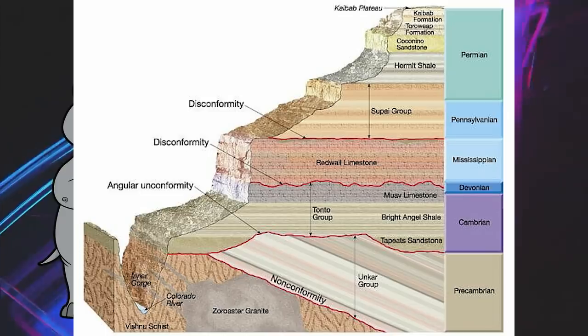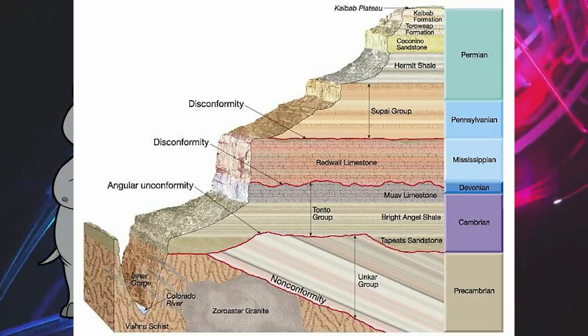There are fossilized footprints, mud cracks, and raindrops in this formation, which shows that it was exposed to the air. The plant and animal fossils that we see in this formation paint a picture of a semi-arid environment with occasionally flooding rivers.